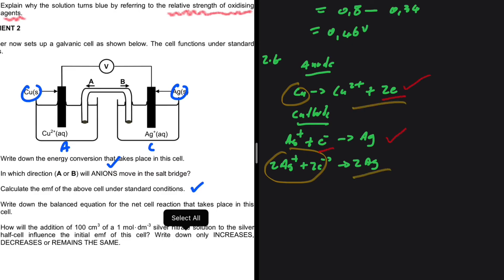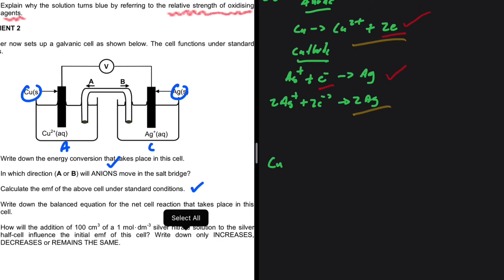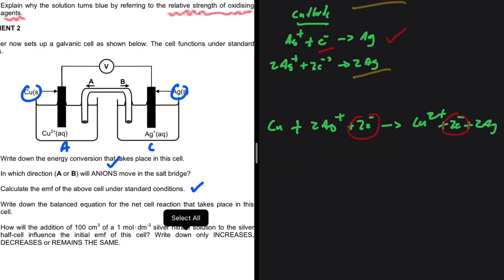If we do that, we're going to have Cu + 2Ag⁺ + 2e⁻ to give us Cu²⁺ + 2e⁻ + 2Ag. In a case like this, we call these electrons spectators—they're not taking part in our reaction, so we can drop them and be left with Cu + 2Ag⁺ → Cu²⁺ + 2Ag. This is our overall reaction.